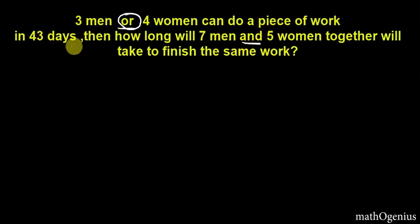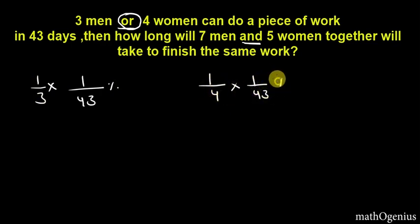So now if there is a piece of work which can be done in 43 days, then every day 1 by 43 of work is done. And every day by one man it's 1 by 3 into 1 by 43. Now for woman it's 1 by 4 into 1 by 43 of work.